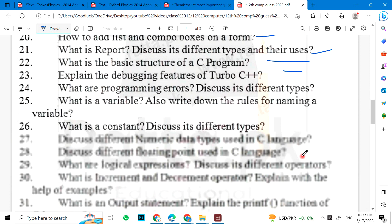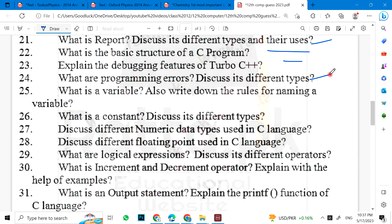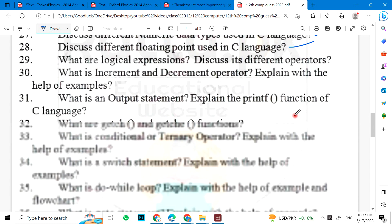19. Turbo C++ debugging feature. Programming errors. Variable. 20. What is the constant? 21. Discuss its types. Discuss different numeric data types. 22. Discuss different floating points used in C language.